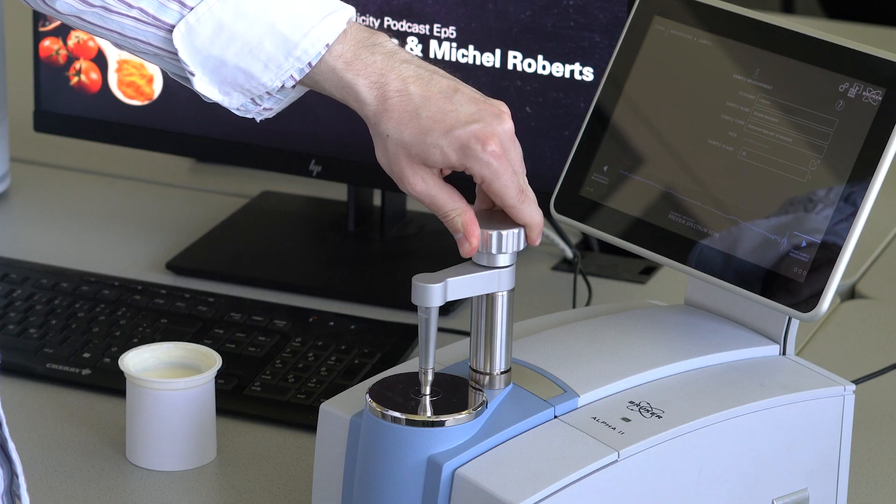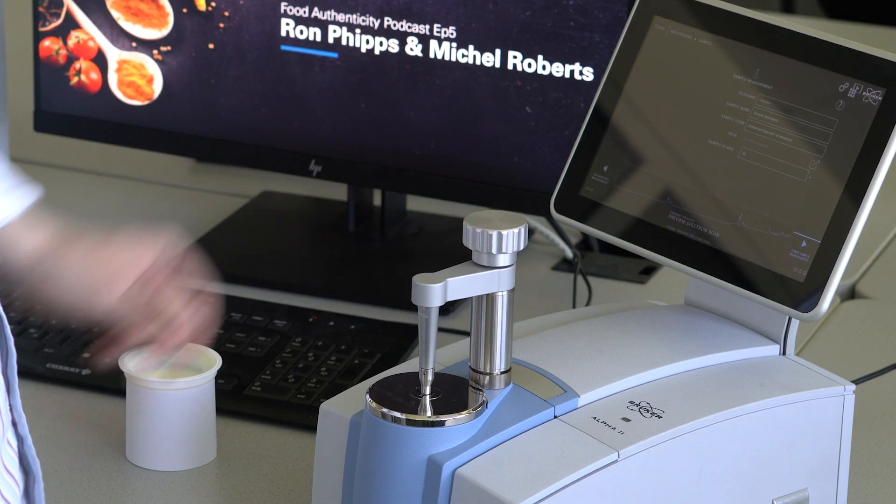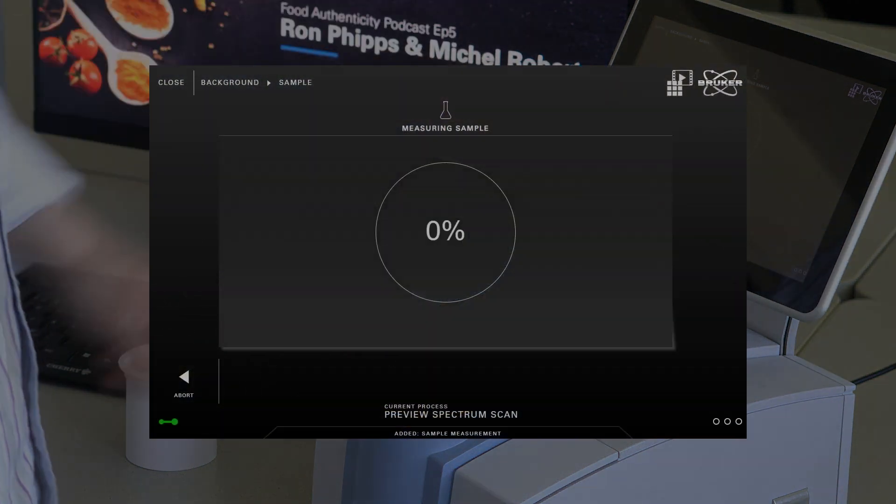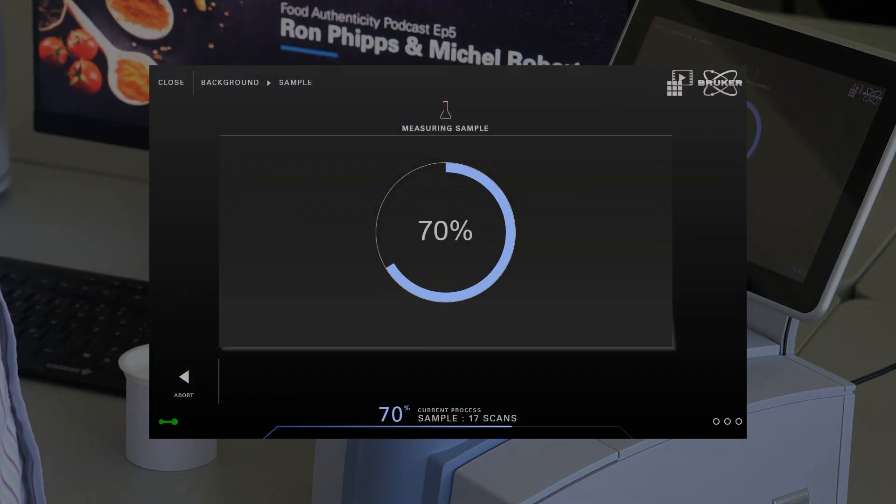The only thing left to do is starting the identification workflow in Opus Touch. Only seconds later, you know what the material is made from.